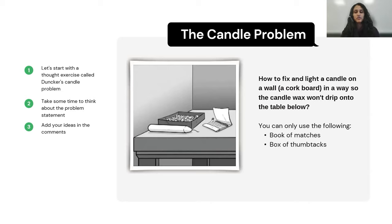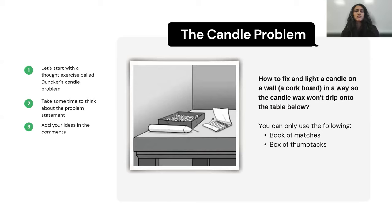How would you fix and light the candle on the wall using only these objects? You should fix it in such a way that the wax from the candle does not drip onto the table below. Use the picture as reference and think about it for a few seconds.